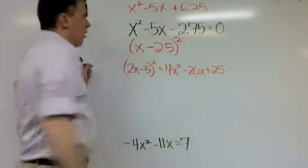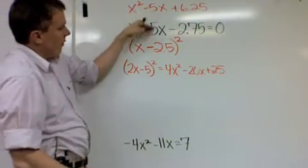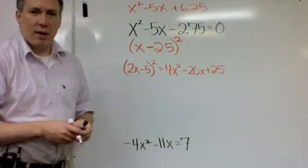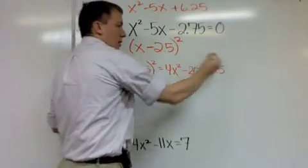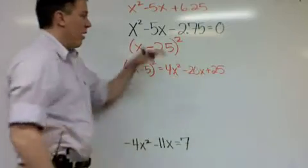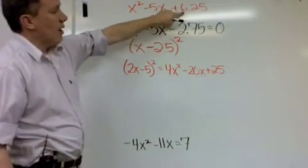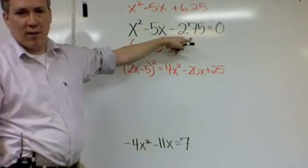But negative 2.5 squared is positive 6.25, and then if I multiply them together and double, I would get negative 5x. So, as of right now, as this stands, everything matches except for the last number. The last number is the one that does not match. So all I need to do is add or subtract something right here to make these two match. In other words, what do I do to 6.25 to get negative 2.75?